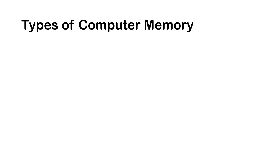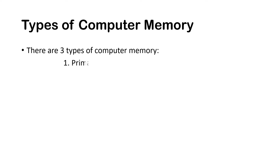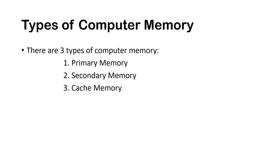What are the types of memory in a computer? There are three types of memory: first is primary memory, then secondary memory, and the third one is cache memory.